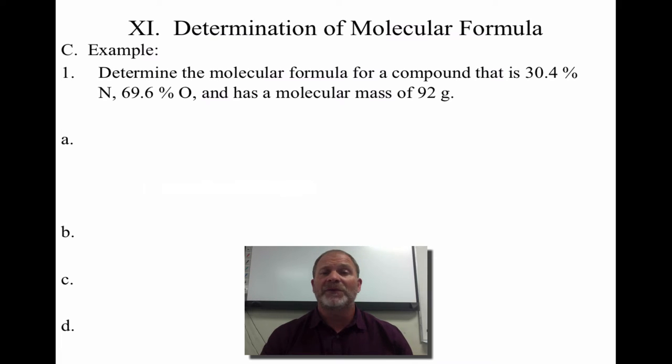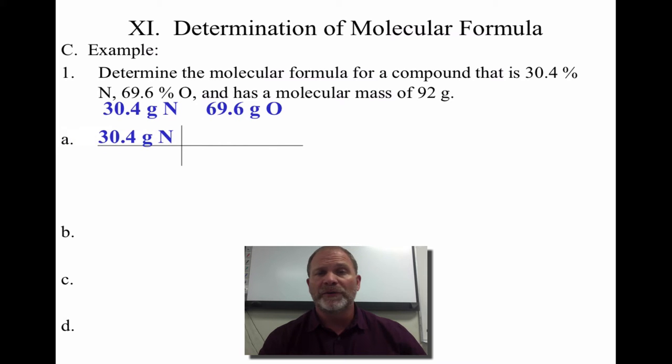So step one is first we have to go through the empirical formula. So again, I'm assuming 100% equals 100 grams. So I change my nitrogen and oxygen both to grams. I then will need to know it's not a gram-to-gram ratio. It's a mole-to-mole, so I have to get from mass to moles. Again, I use molar mass.